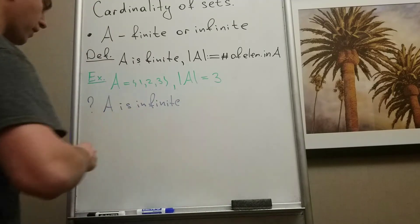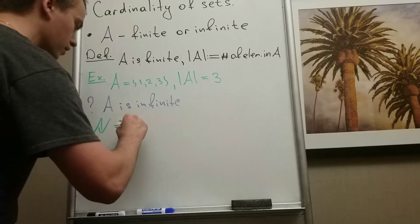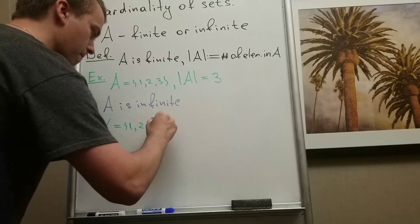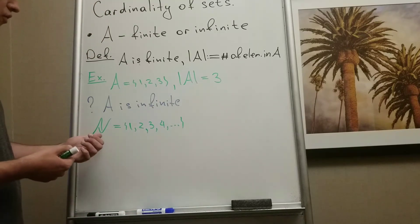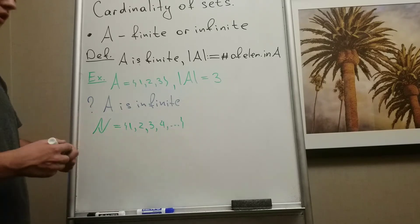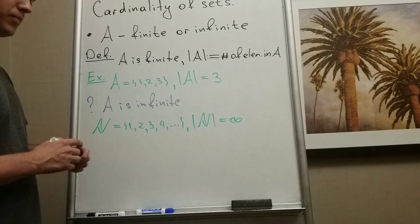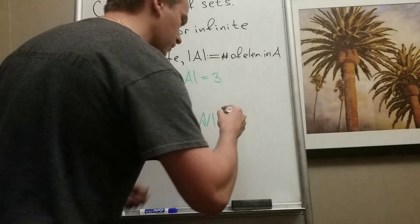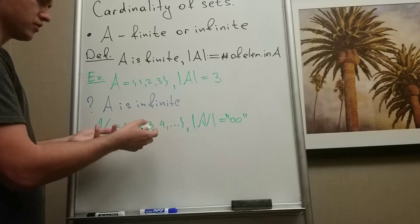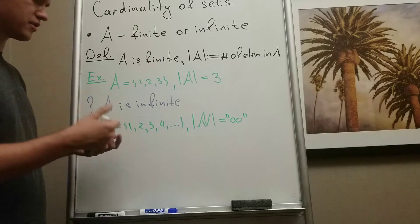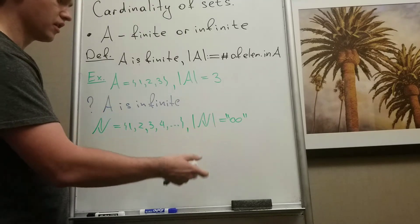One of the simplest examples of an infinite set is the set of natural numbers — the first infinite set you know from elementary or high school. We also have the set of integers. If we try to count the number of elements, we can say the cardinality of N is infinite, but what does infinite mean? Do we have one infinity or more than one? We know the Peano axioms give us the foundation for natural numbers, but what kind of foundation can we have for the infinite?